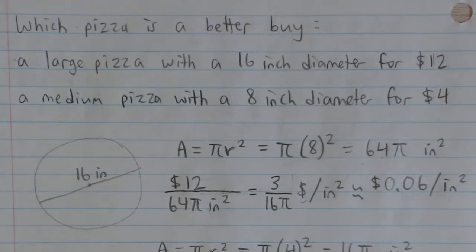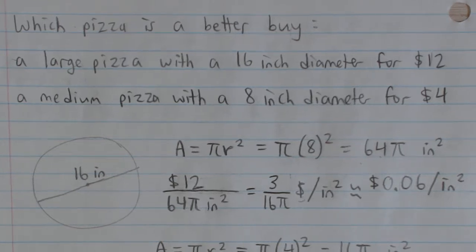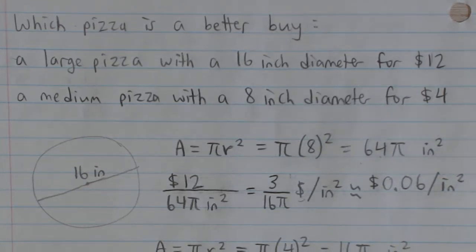So back to this question. What is it asking? We need to calculate for each pizza what is the cost per area, because that's what we're comparing - cost per area for each pizza. We'll see which one costs more or less, and the one that costs less is going to be the better buy.